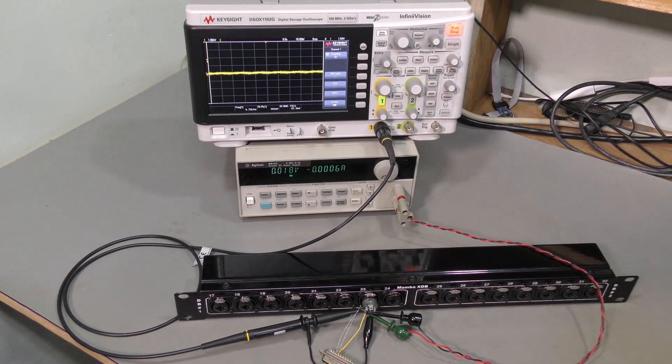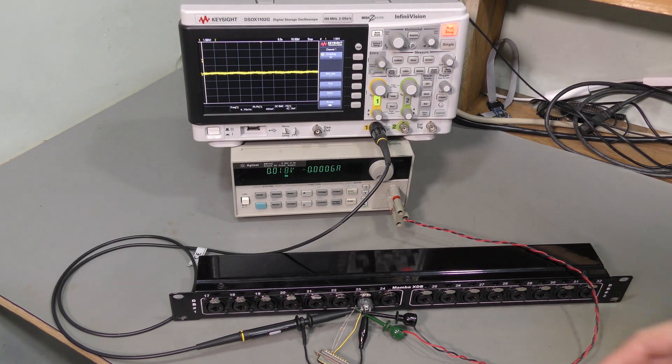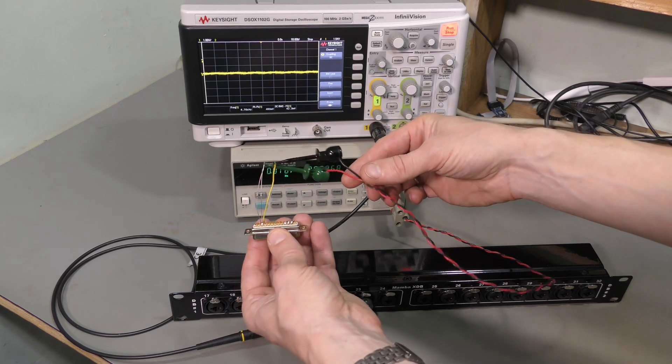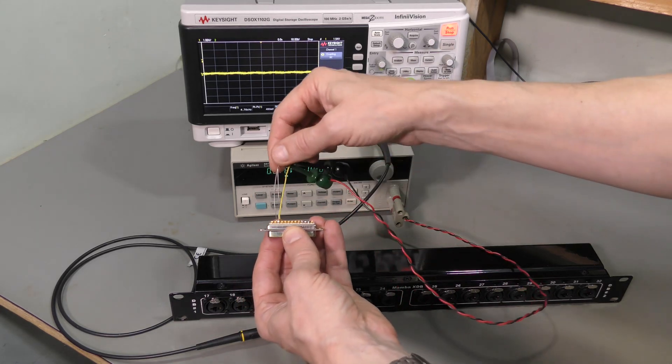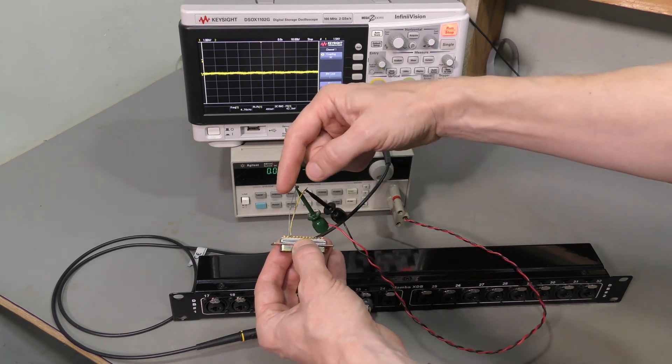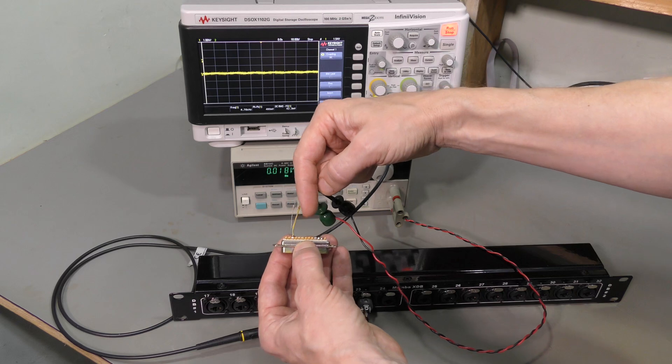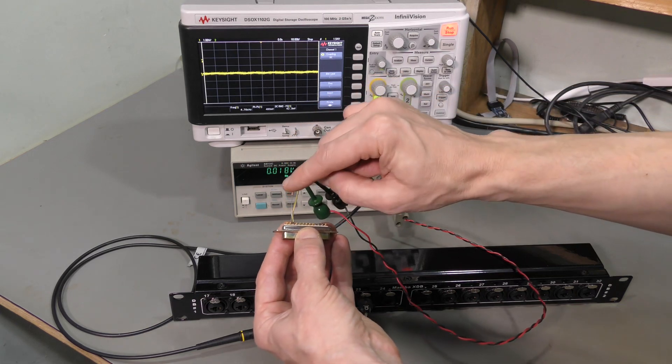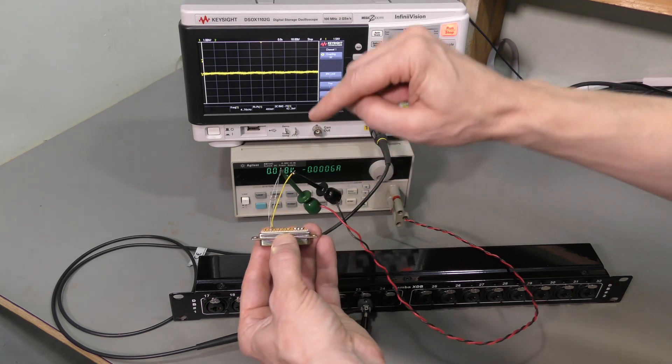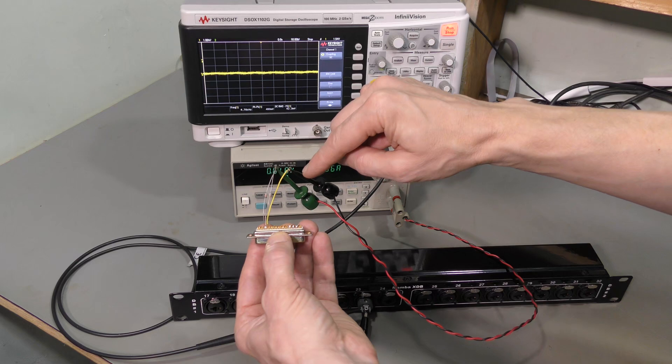Let's try to reproduce the problem in lab conditions. Here we have DB25 connector, channel 7 is here, ground and differential pair. Audio signal goes across the differential pair, but phantom power rides on both lines of the differential pair with respect to ground.